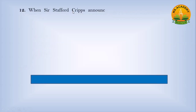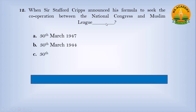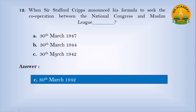When did Sir Stafford Cripps announce his formula to seek cooperation between the National Congress and the Muslim League? Option A, 30th March 1947; Option B, 30th March 1942. Answer: B — 30th March 1942.